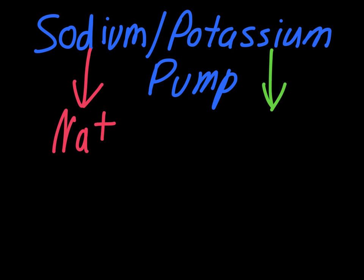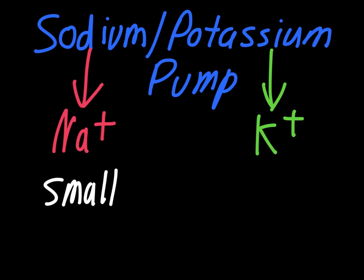Potassium is represented with the letter K, and it is also a charged particle. Since both of these are charged, the important thing to remember is that charged particles cannot enter and leave the cell unless they go through a protein channel. Earlier in the chapter we discussed simple diffusion, where smaller things like oxygen and carbon dioxide can go directly through the phospholipids because they are both very small and neutral.